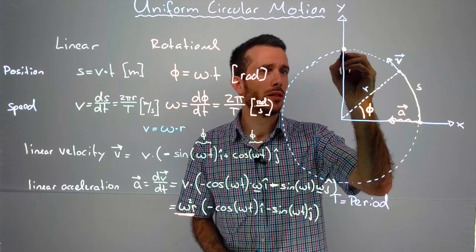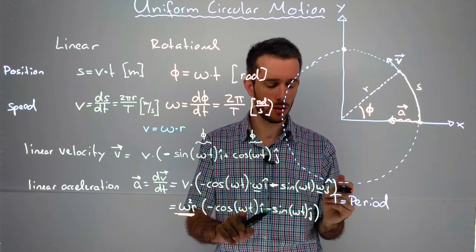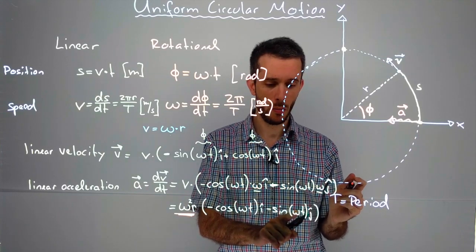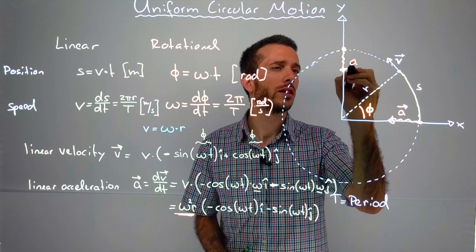What about here? At 90 degrees, I will have 0 for the x-component, and I have minus 1 for the y-component. The acceleration would be that way.